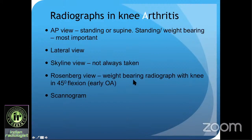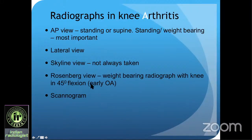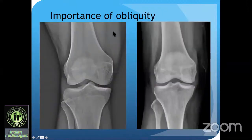The Rosenberg view is a weight-bearing or standing radiograph done with 40-degree flexion of the knee. This is particularly important to diagnose early OA because you can see the joint space very nicely — even mild narrowing in the joint space can be picked up well on the Rosenberg view. The last view is the scanogram, which we'll discuss later.